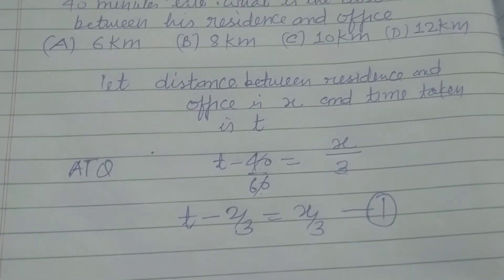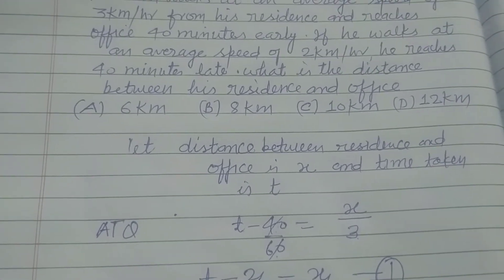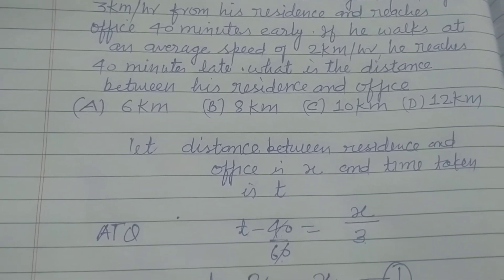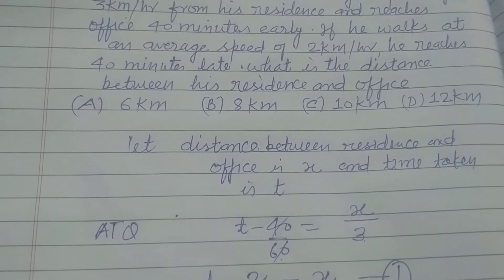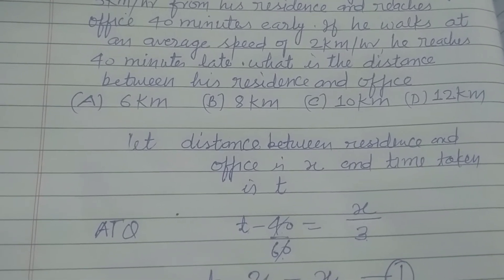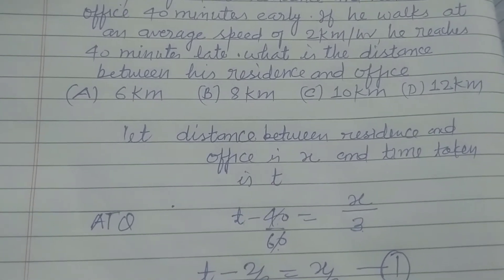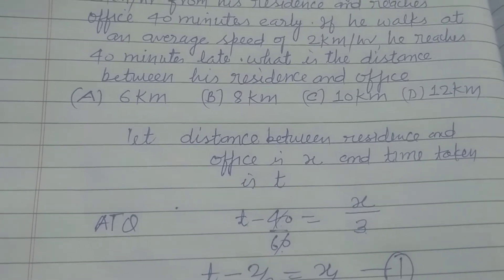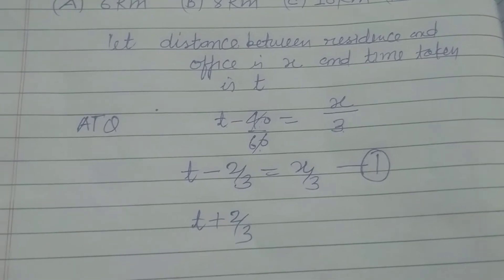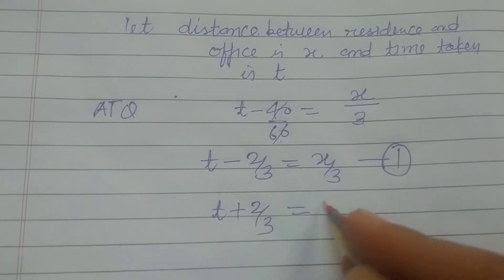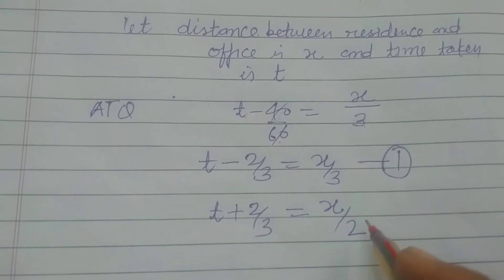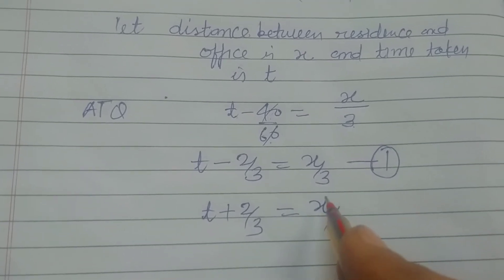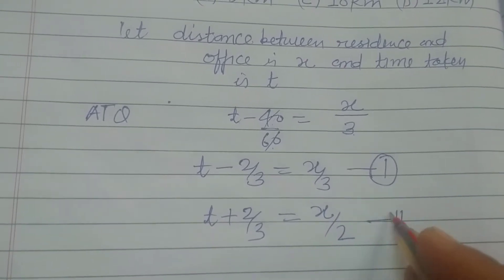Secondly, according to the question: if he walks at an average speed of 2 kmph, he reaches 40 minutes late. So the time taken is (t + 40/60) hours, which equals x/2 when covering distance x at a speed of 2 kmph. This is our second equation.